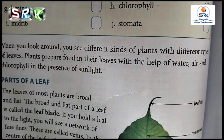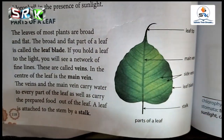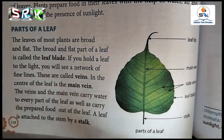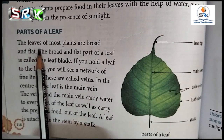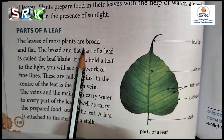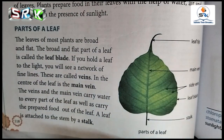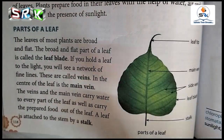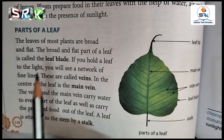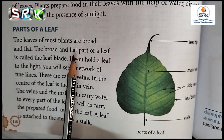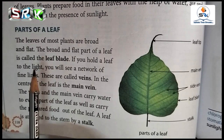We are going to see the parts of a leaf. How do we look at the leaves? Listen carefully — the leaves of most plants are broad and flat. The broad and flat part of a leaf is called the leaf blade.